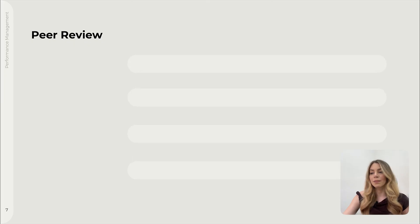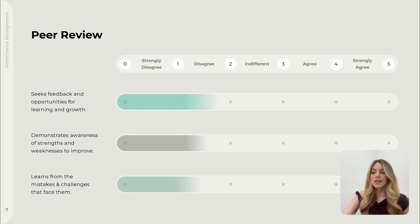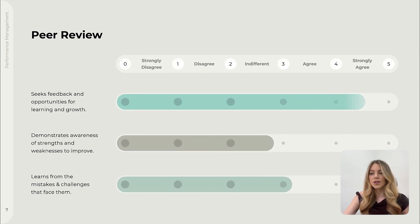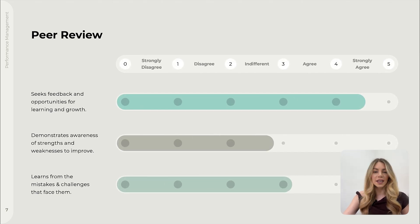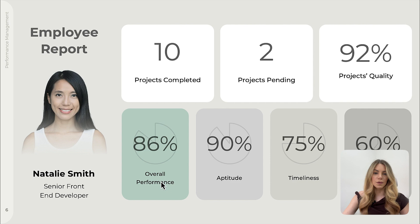Here is an example of a peer review form. Peers can rate performance on a scale from strongly disagree to strongly agree. These scores are then compiled to give a thorough overview of the employee's performance.